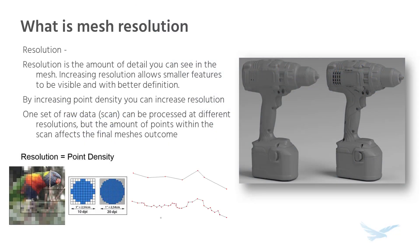For starters, let's discuss what mesh resolution is. Resolution of a mesh is the amount of detail you can see in the mesh itself. By increasing resolution, we can have smaller features become visible and with better definition. Increasing point density of the raw data, also known as the point cloud, helps increase the resolution of a mesh, giving it more data to work with. You can also process a point cloud at several levels of resolution — it isn't a one-time process. On the right, we have two examples of a mesh. The one on the left is a lower resolution than the one on the right. With the increased resolution, we can see the vents and bolts much easier since our triangle size of the mesh is smaller, allowing for smaller feature definition.